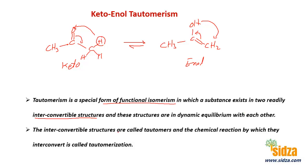The interconvertible structures are called tautomers. So the keto and enol forms are the tautomers. The chemical reaction by which this interconversion occurs is called tautomerization.